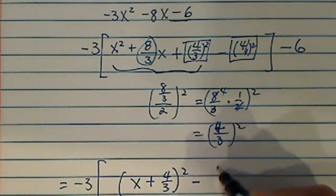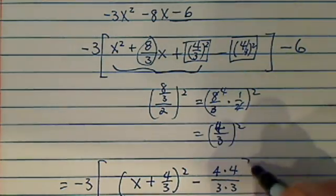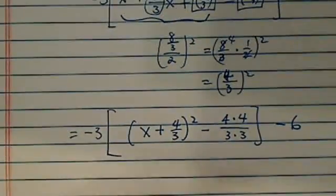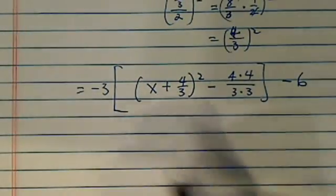Then minus, let's multiply this out. It's 4 times 4, 3 times 3. Now, you notice I didn't put a 16 over 9 out. That's because later on I'm going to have to multiply 3 anyway, so I figured this way I'll see the cancellation easier.